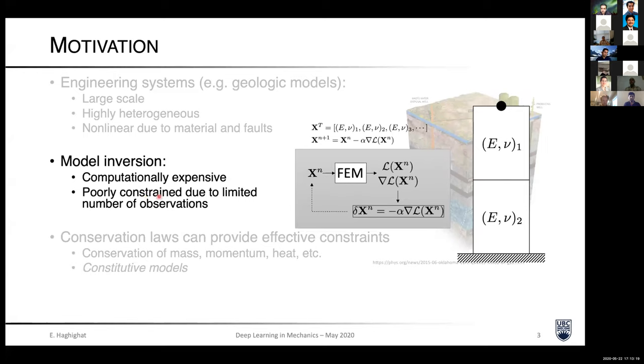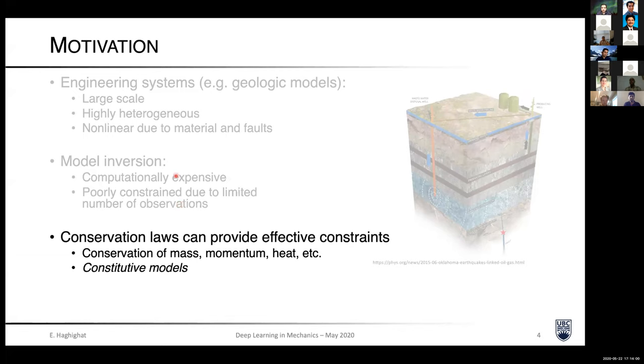Also, some problems are poorly constrained. For example, this simple bar, if we only have access to readings from a displacement sensor at the top, this is unconstrained. There are many combinations of this elasticity modulus and Poisson ratio that can generate essentially the same displacement field at top. So I don't look at the second problem. For now, we assume that the data exists, but the second point is really a big problem in many engineerings. So most problems are complex and classical methods are expensive, if not intractable.